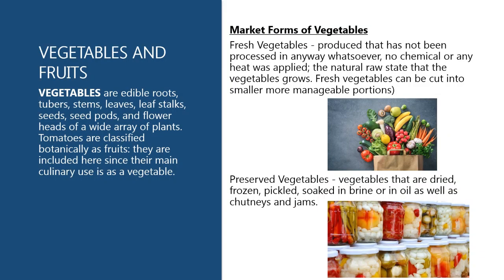Vegetables and fruits. Vegetables are edible roots, tubers, stems, leaves, leaf stalks, seeds, seed pods, and flower heads of a wide array of plants. Tomatoes are classified botanically as fruits but are included here since their main culinary use is as vegetables. Market forms of vegetables: we have fresh and preserved vegetables. Fresh vegetables are produce that has not been processed in any way — no chemical or heat was applied — in its natural raw state. Fresh vegetables can be cut into smaller, more manageable portions. Preserved vegetables are vegetables that are dried, frozen, pickled, soaked in brine or oil, as well as chutneys and jams.